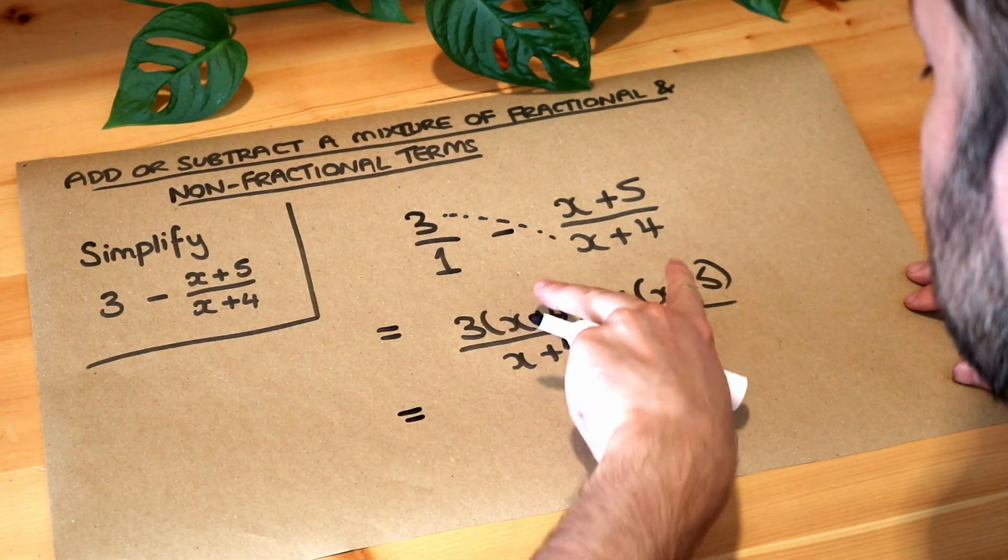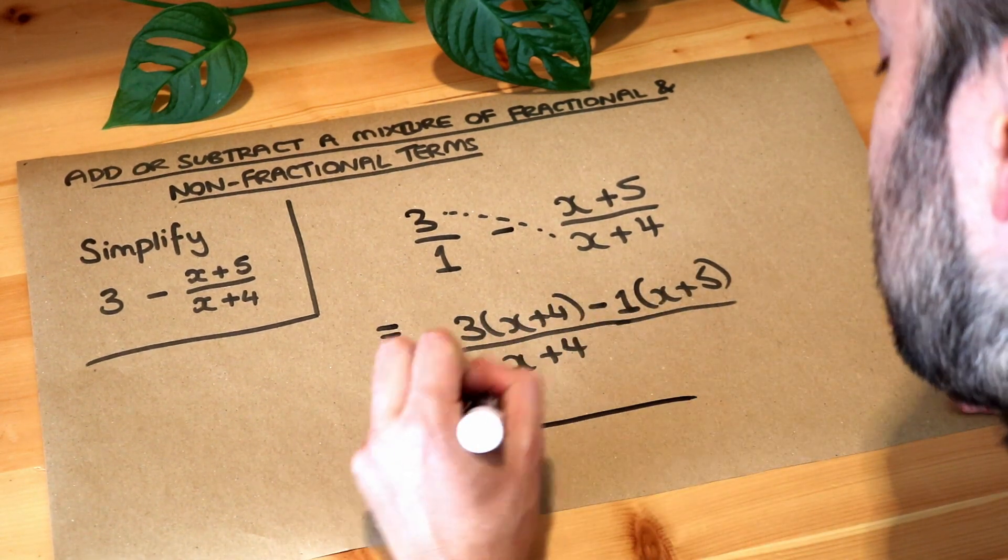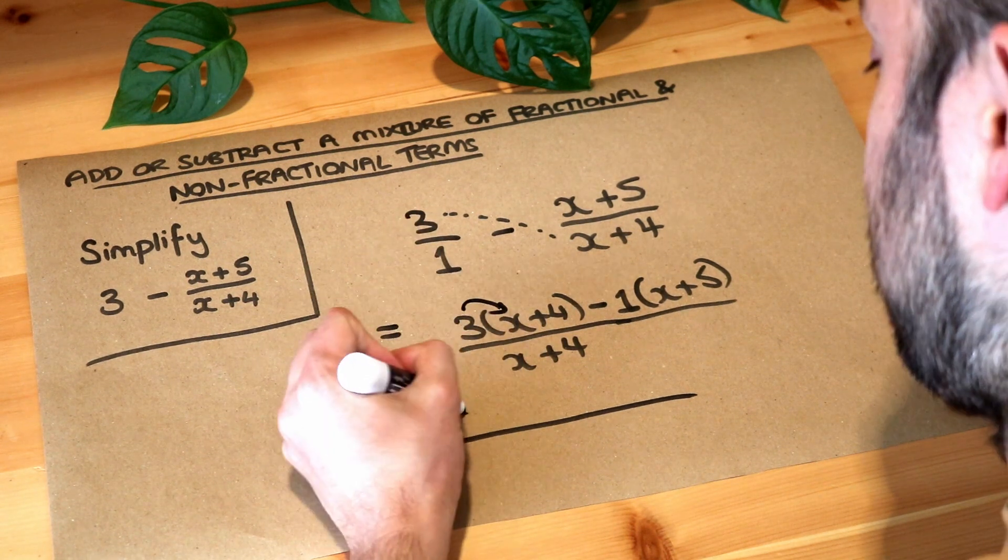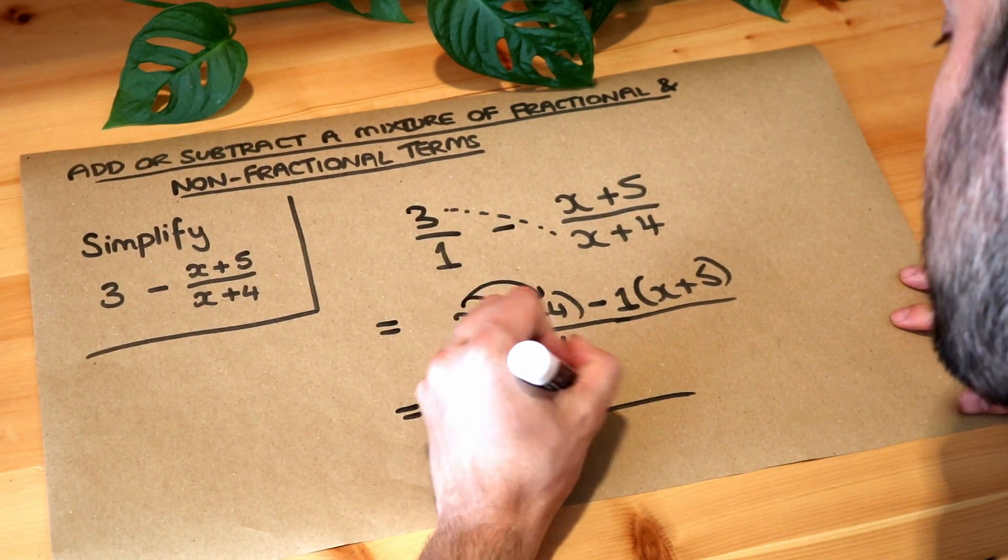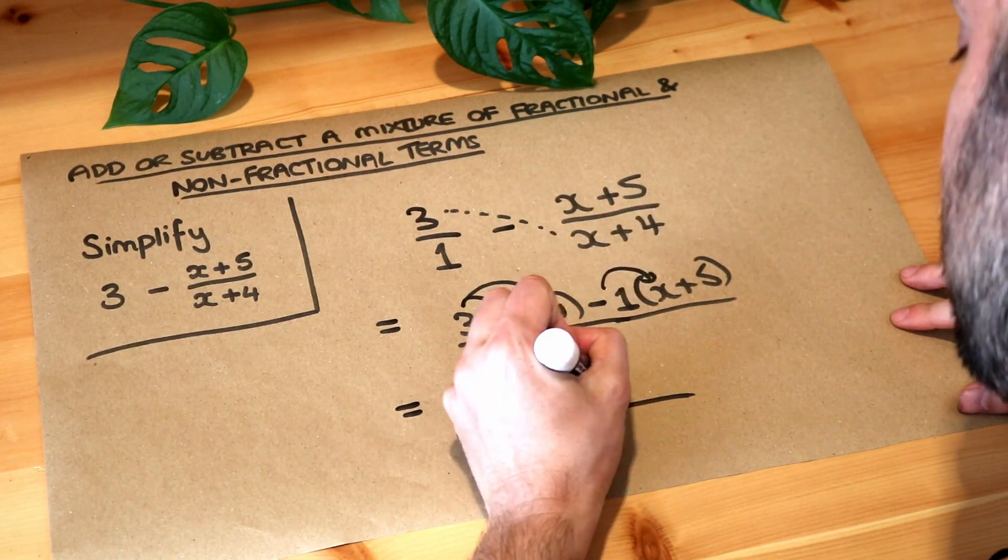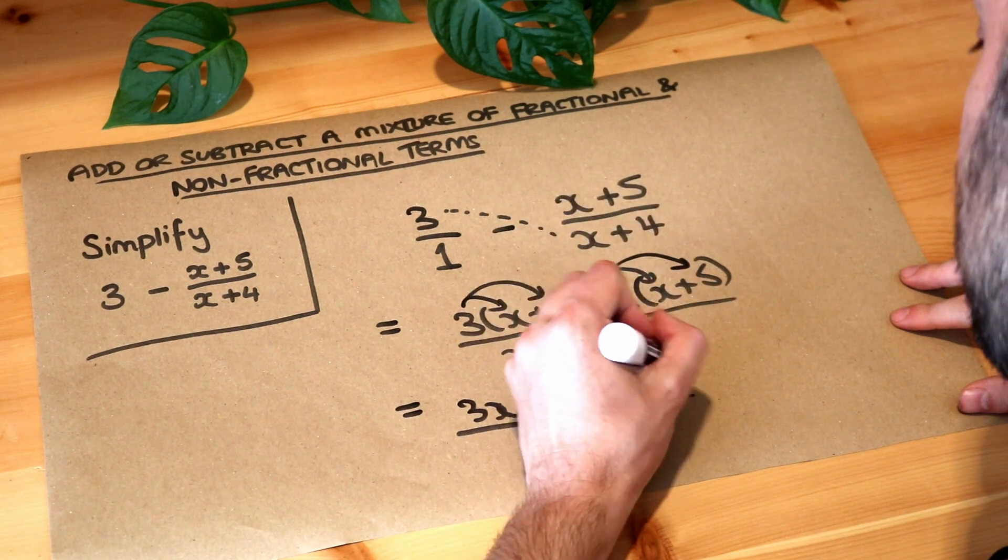And then all we need to do is just expand and simplify the numerator. So in the numerator, we've got three times the x, which is three x. We've got three times the four, which is 12. We've got minus one times x, which is minus one x. And we've got minus one times five, which is minus five.